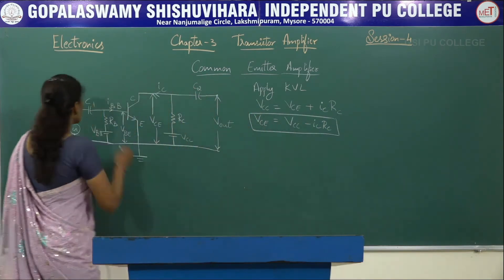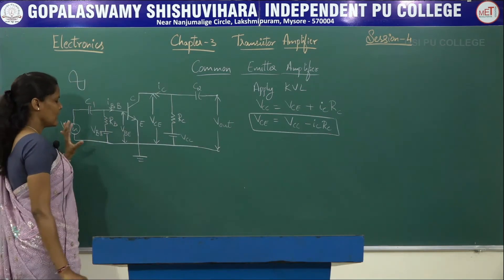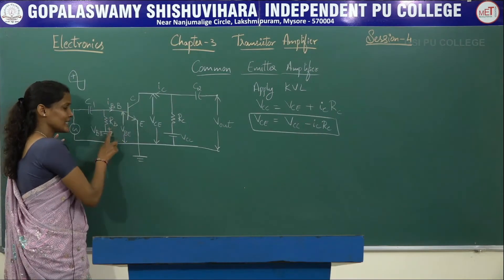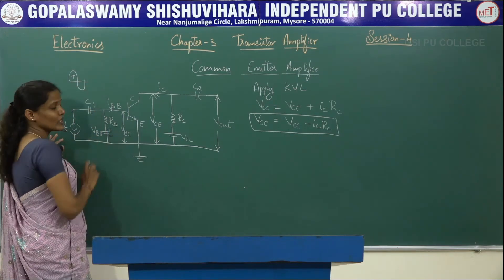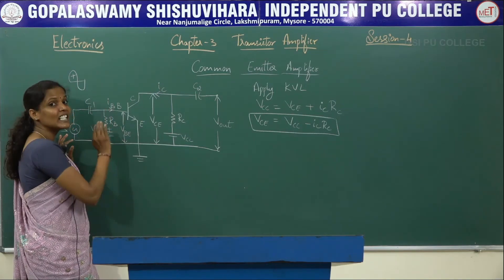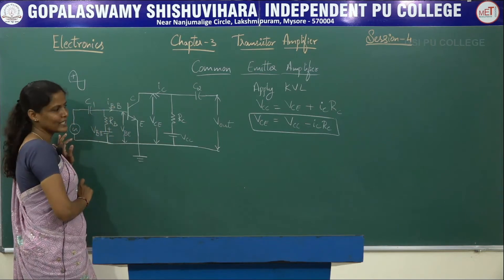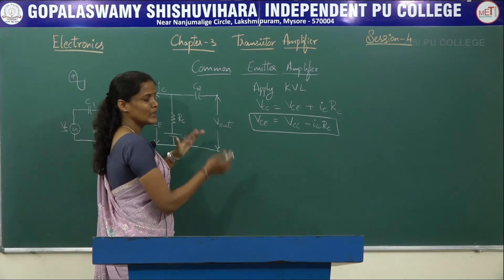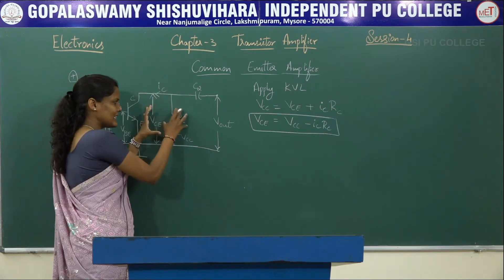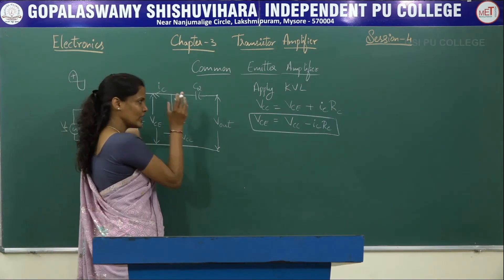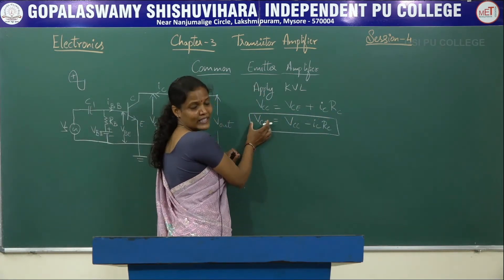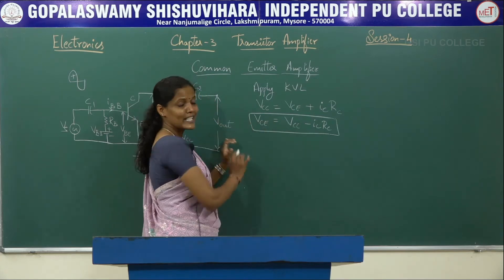With the help of this expression, let us understand what happens when a positive half cycle is applied at the emitter-base junction. When the positive half cycle appears, the base terminal is at positive potential. As soon as the positive half cycle appears across this junction, the forward bias of this junction increases, which in turn increases the base current. If the base current increases, the collector current also increases. If the collector current increases, the voltage drop across resistor Rc also increases, which means Vce decreases.